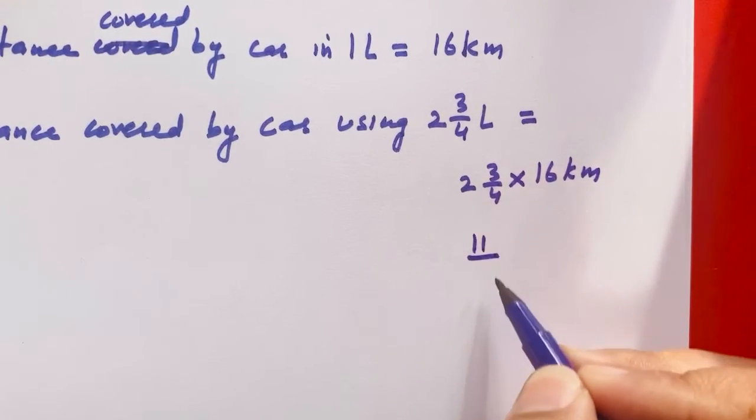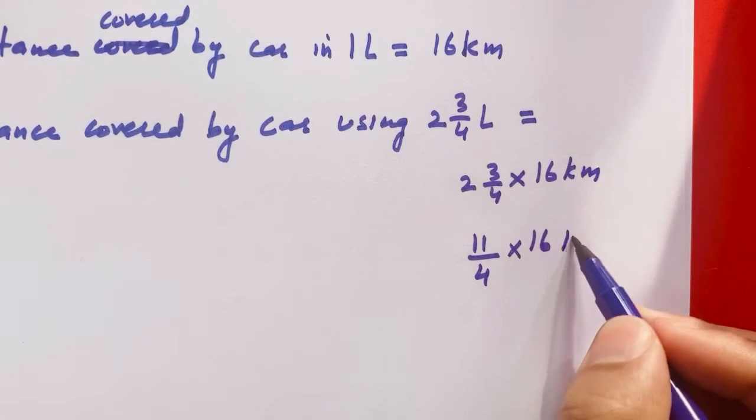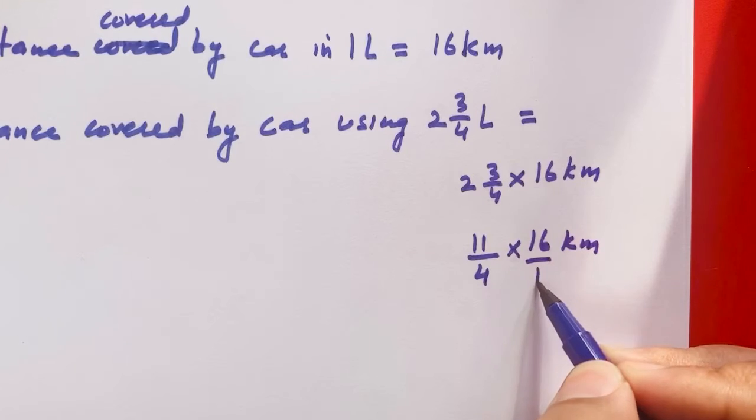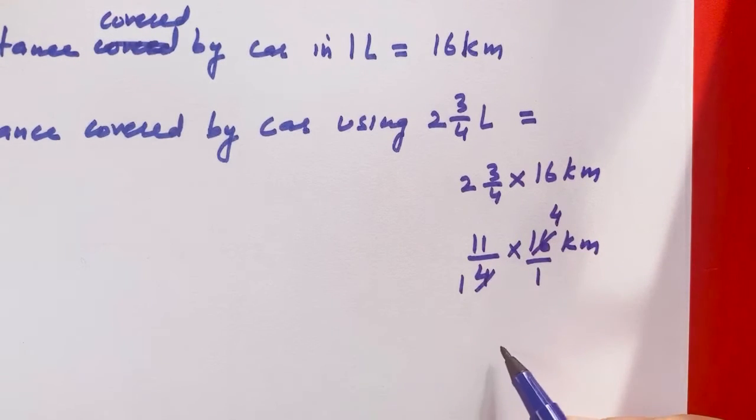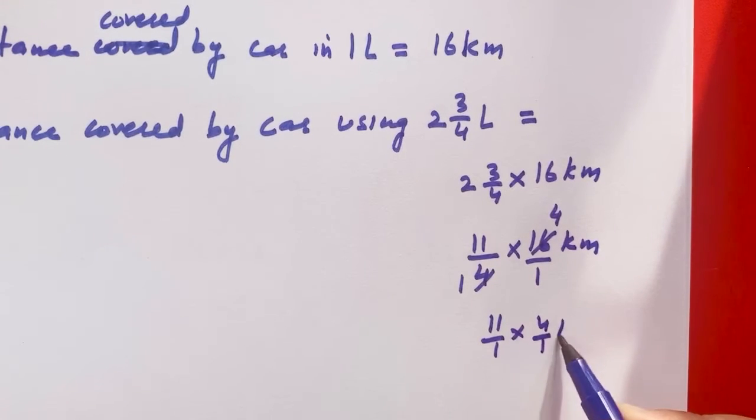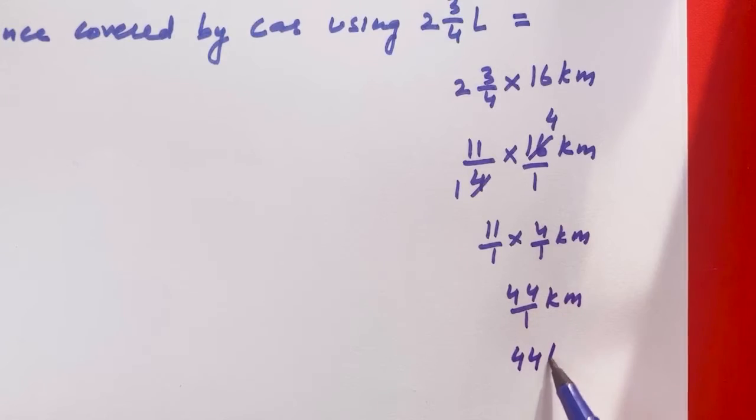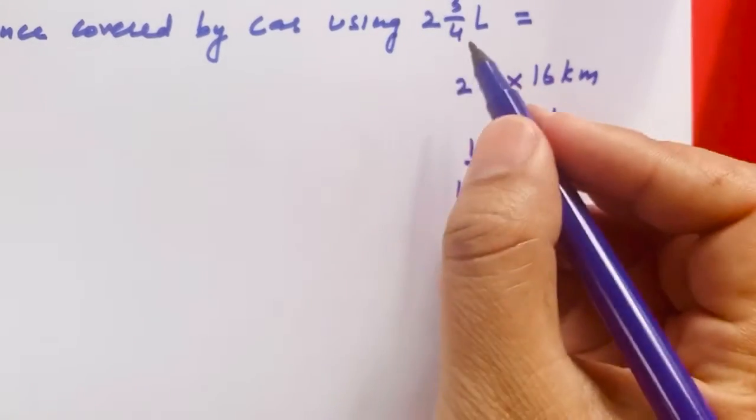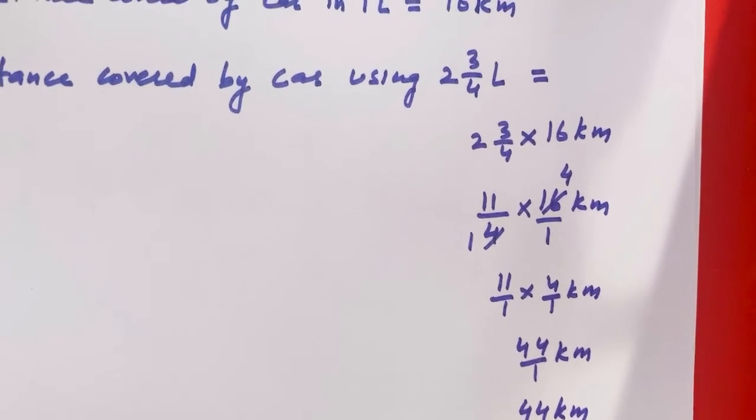Convert to improper fraction: 11 upon 4 into 16. 4 goes into 16, 4 times. So what happens? 11 upon 1 into 4 upon 1 km. 11 times 4 is 44 upon 1 km. If the car uses 2 and 3/4 liters, then it covers 44 km. Okay?